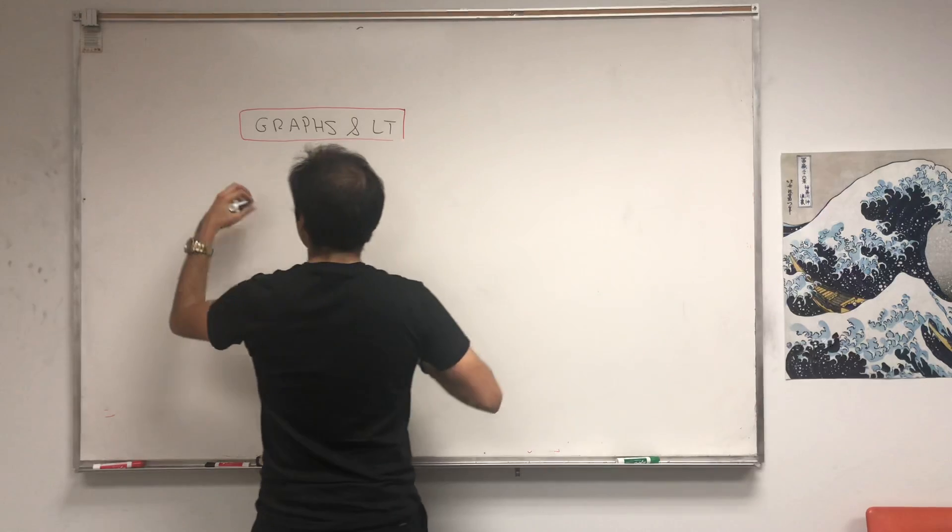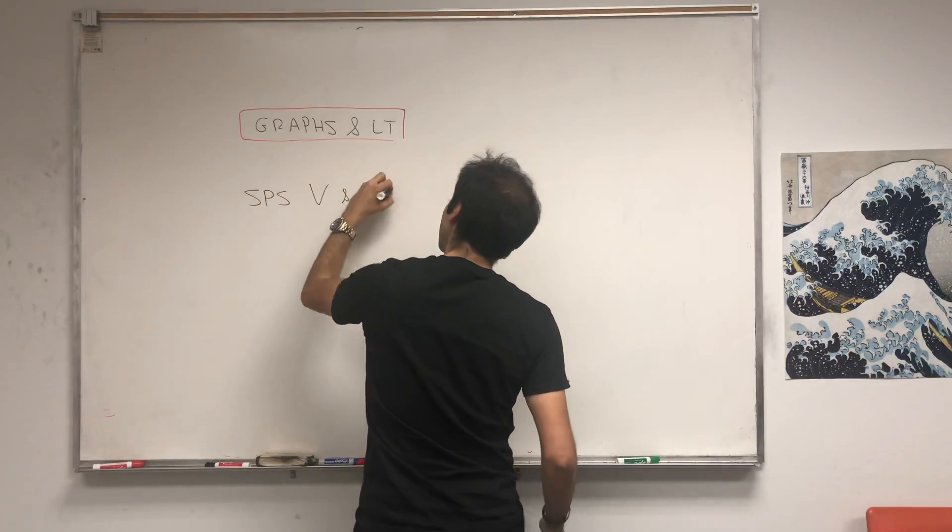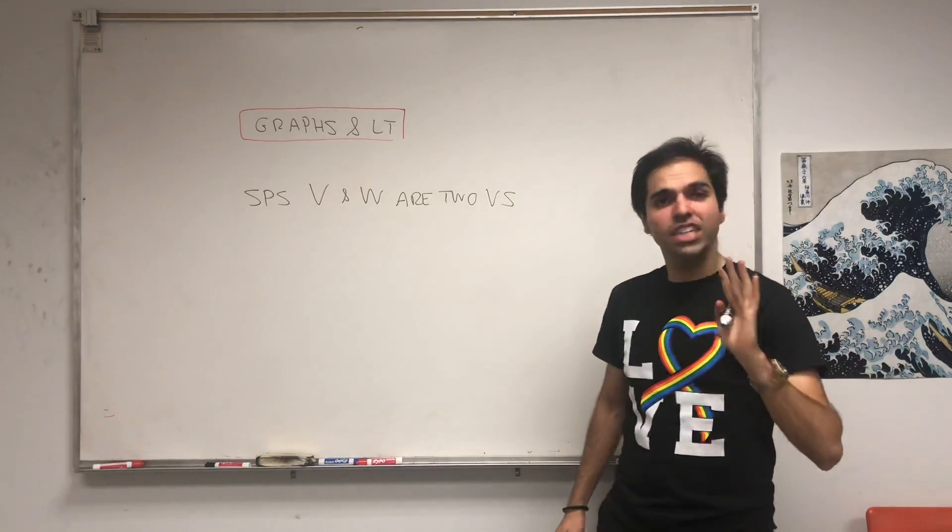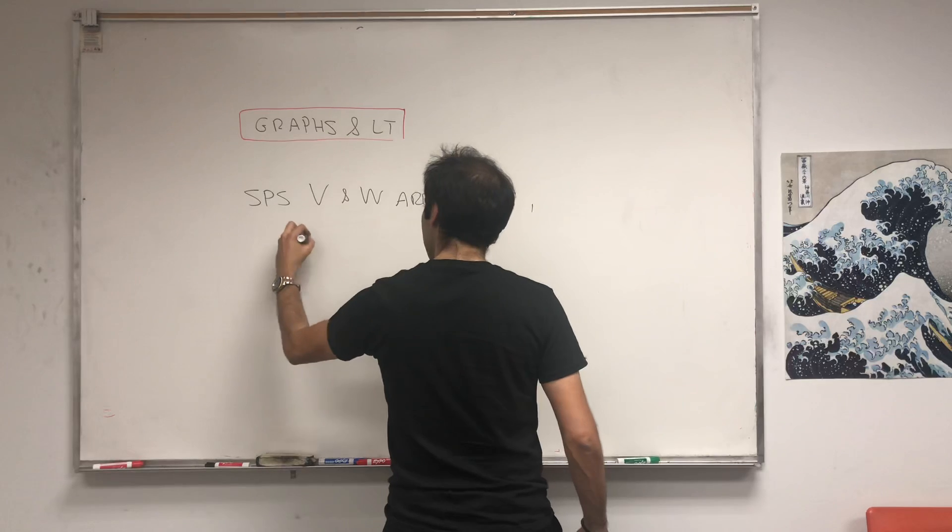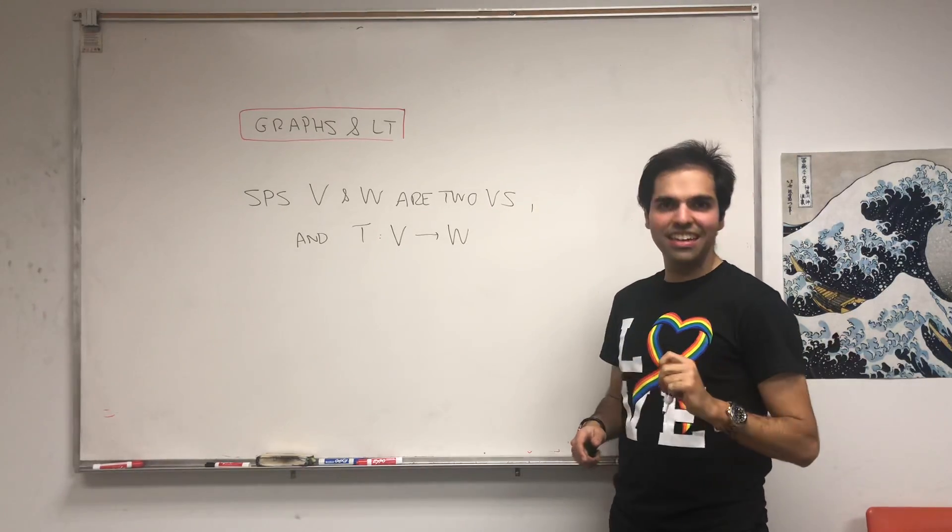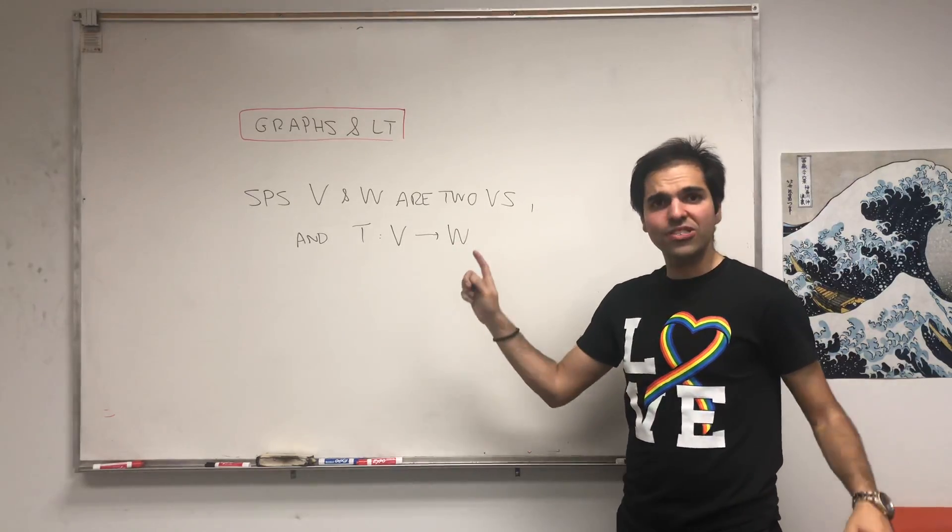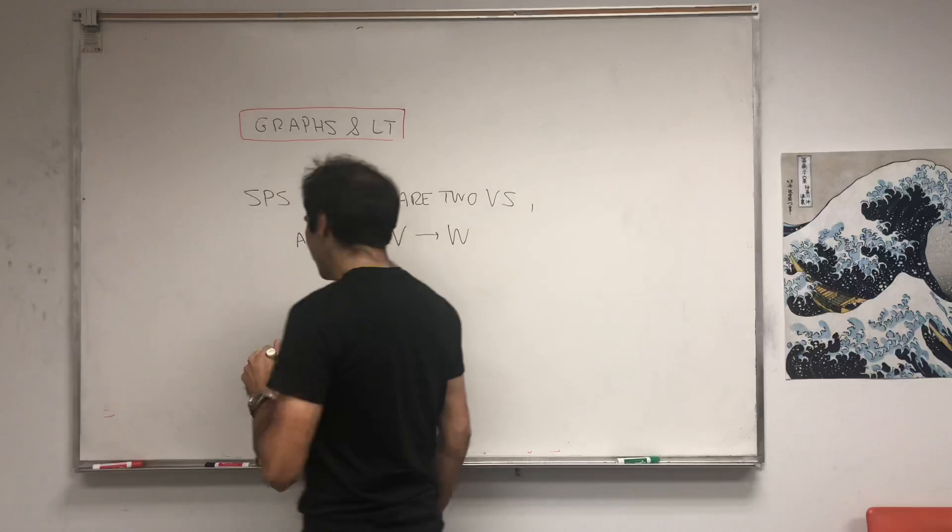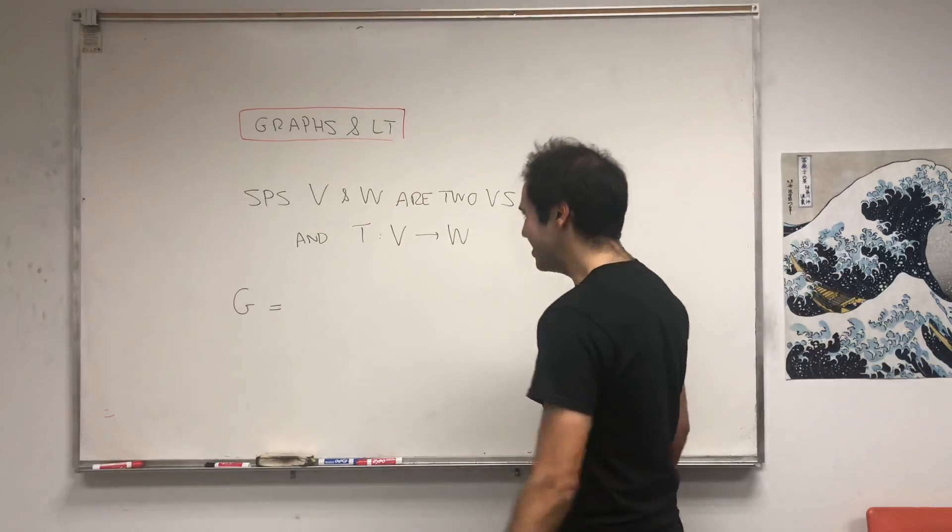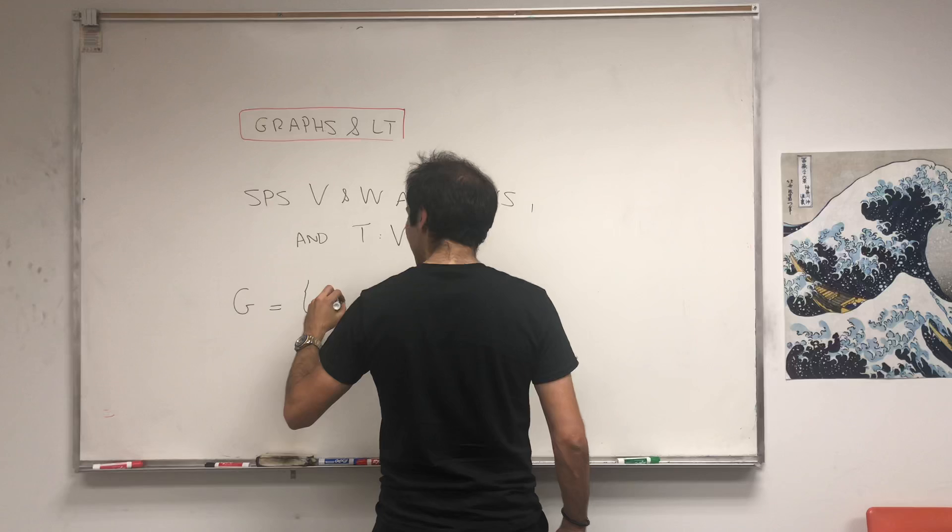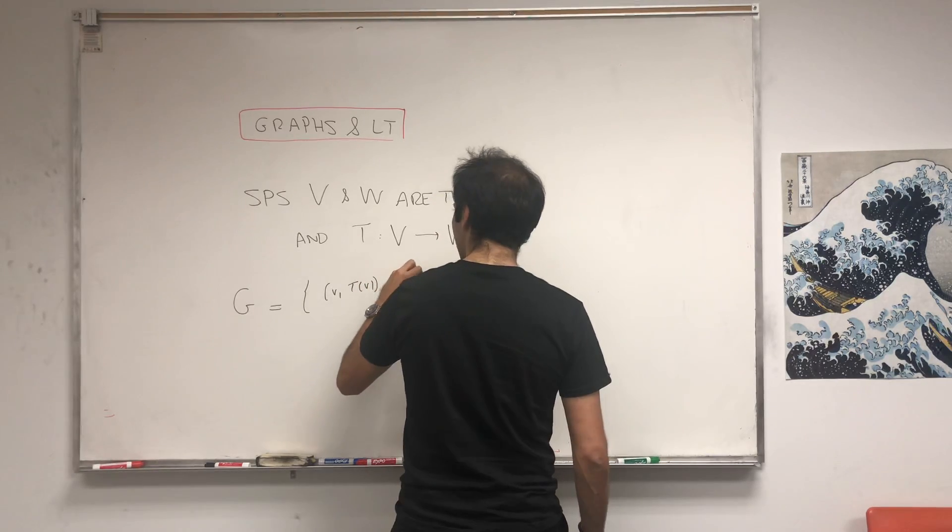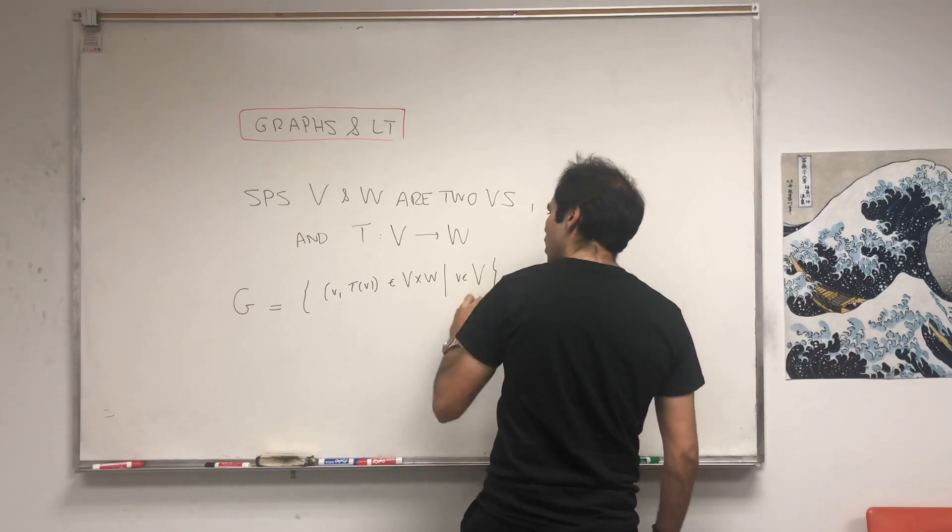So suppose V and W are two vector spaces, and T be a function from V to W. Careful, we're not assuming yet that T is a linear transformation. It turns out it's a linear transformation if and only if something interesting happens. For this, let's define the graph of a linear transformation. Let's call it G. G is the set of points of the form (v, T(v)) in V × W, where v goes through all of V.